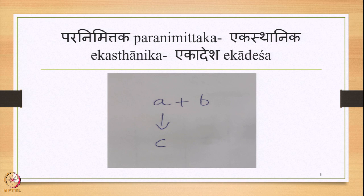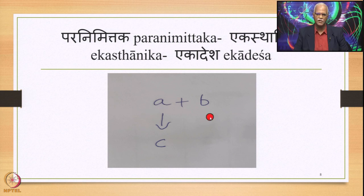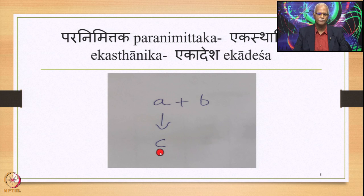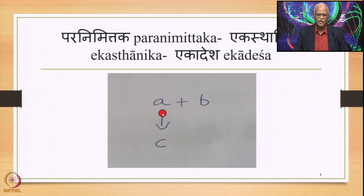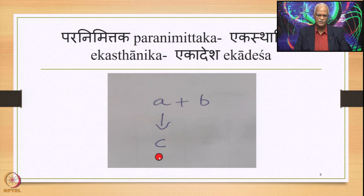Then comes Paranimittaka Ekasthanika Ekadesha, represented diagrammatically as A plus B in close proximity in Samhita mode. B comes immediately after A, and in the environment of B, A gets substituted by C. B is Parah, A is Ekasthanika, and C is Ekadesha. So C is Paranimittaka Ekasthanika Ekadesha. A plus B is the input and C plus B is the output.